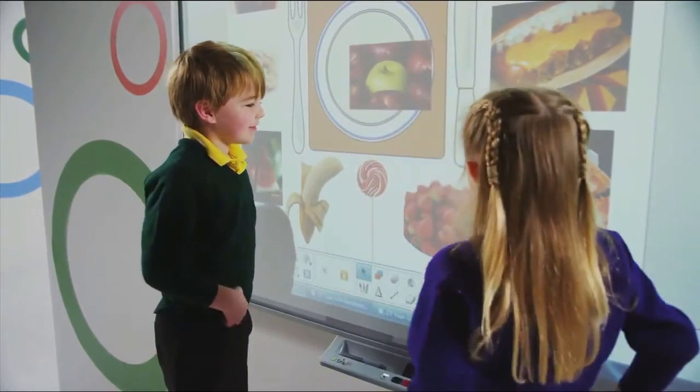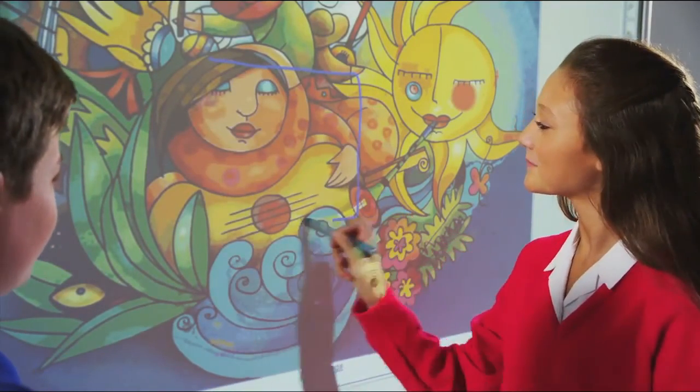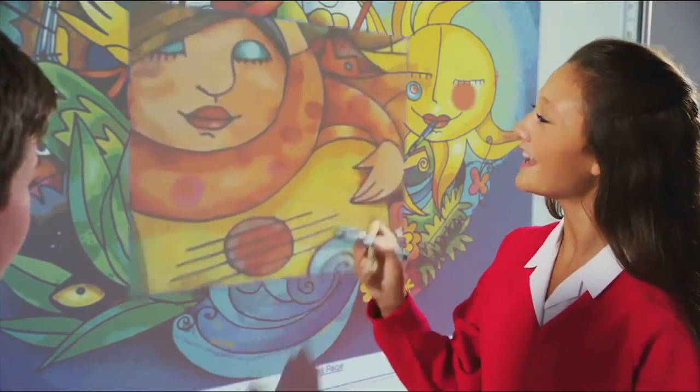The SmartBoard M600's durable low-gloss surface is optimized for projection, ensuring that students can see content clearly from anywhere in the room.